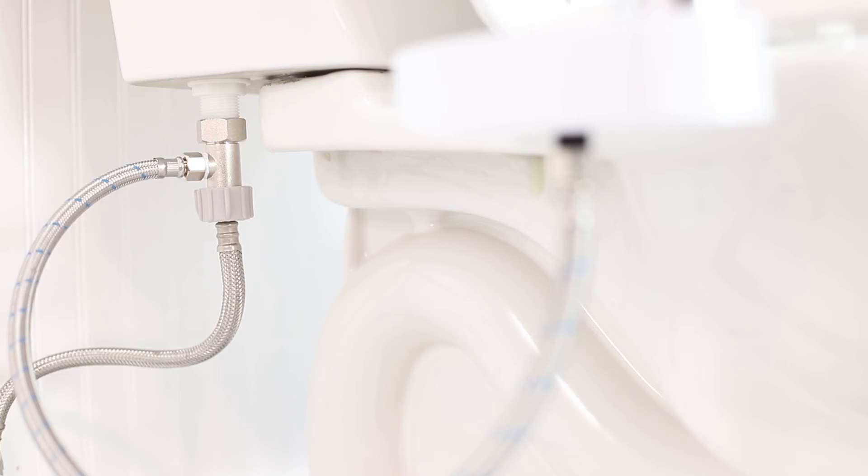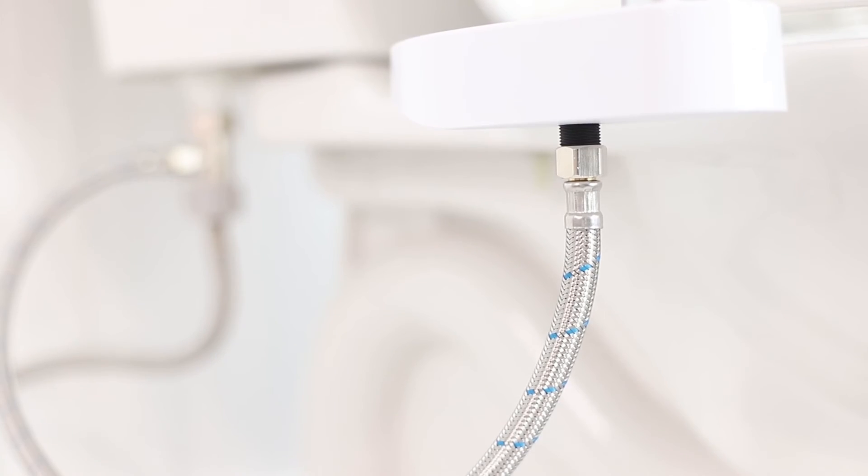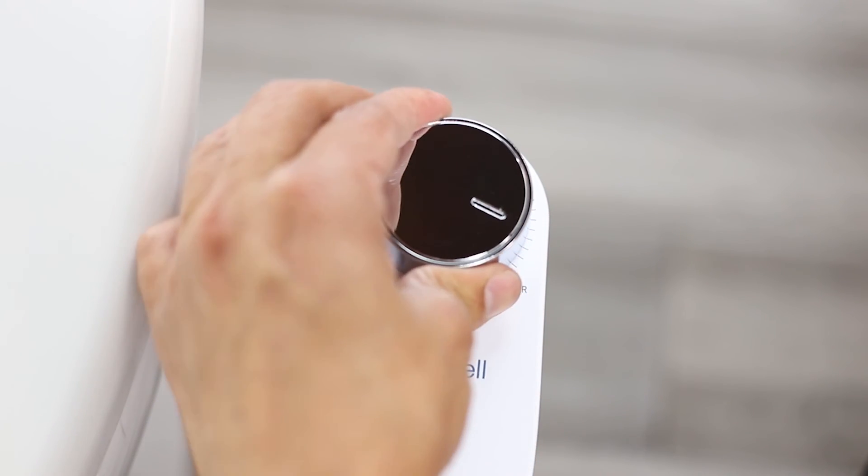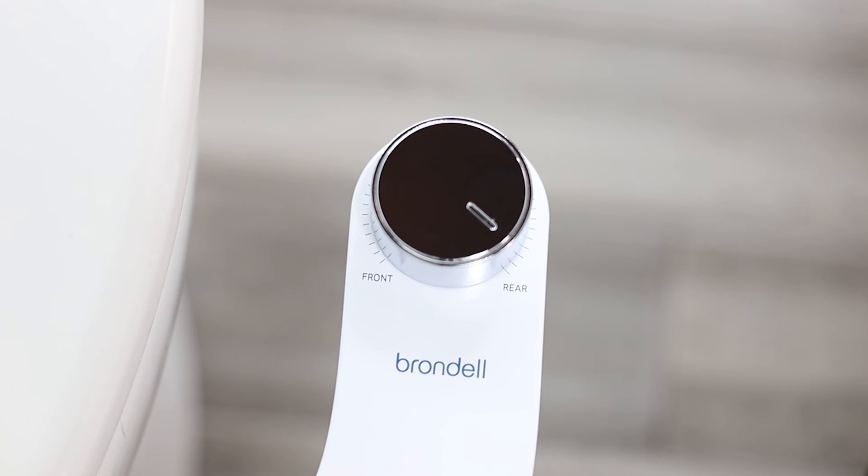Slowly turn on the water supply valve and check for leaks. To use the bidet, simply turn the control knob. The further the dial is turned, the higher the water pressure will be.